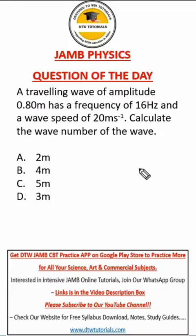Okay, we have a JAMB Physics question here. It says a traveling wave of amplitude 0.80 meter has a frequency of 16 hertz and a wave speed of 20 meters per second. It says here to calculate the wave number of the wave.